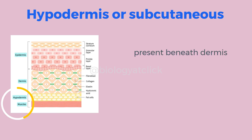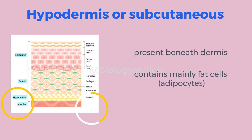The last or innermost layer of the skin is the subcutaneous layer, also called hypodermis. It is composed of fat cells known as adipocytes, nerves, and blood vessels.